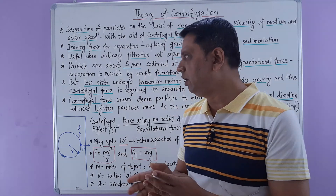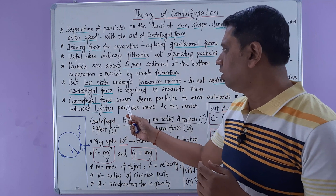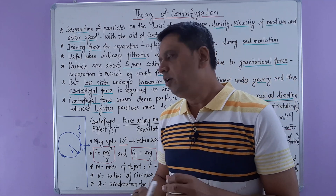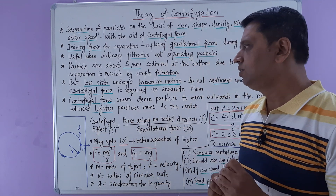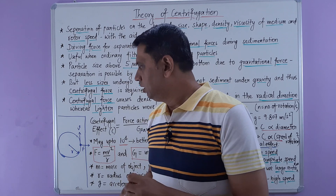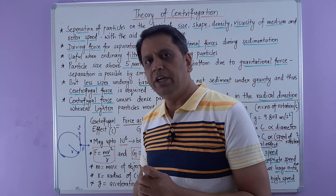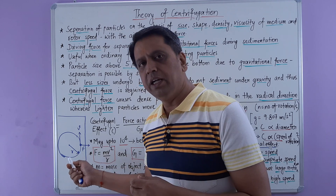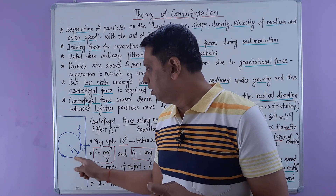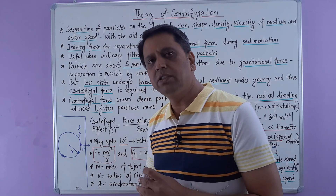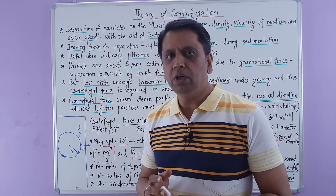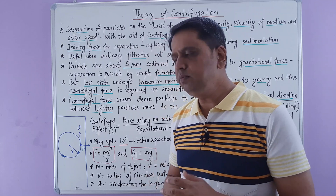The centrifugal force causes denser particles to move outward in the radial direction, whereas lighter particles move toward the center. In a centrifuge where particles are moving in a circular path, the heavier particles will move outward in the radial direction while the lighter particles will move approximately to the center point of the liquid medium. In this way, the two particles can be separated from each other.